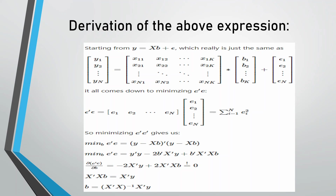The derivation of the expression beta = (X-transpose * X)^(-1) * X-transpose * y is as follows. We know that linear regression is represented by y = Xb + e, where X represents the set of independent variables on which y is changing, b represents the coefficients of the independent variables, and e represents the error between the predicted value and the actual value.